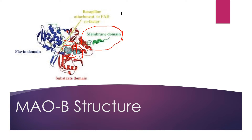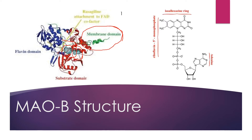Each subunit also contains a covalently bound FAD molecule, also known as flavin adenine dinucleotide. This prosthetic group is oxidized in a reaction with oxygen gas to create the reactive oxygen species hydrogen peroxide in the pathway of oxidizing its substrates.